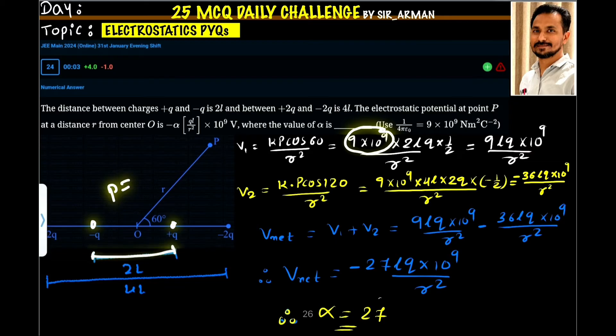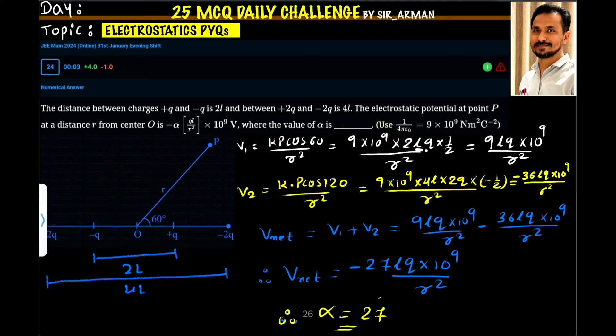The distance is 2L and the charge is Q, so the dipole moment is 2L times Q. Cos 60 is 1/2, so this becomes 9LQ times 10 raised to 9 divided by R squared.